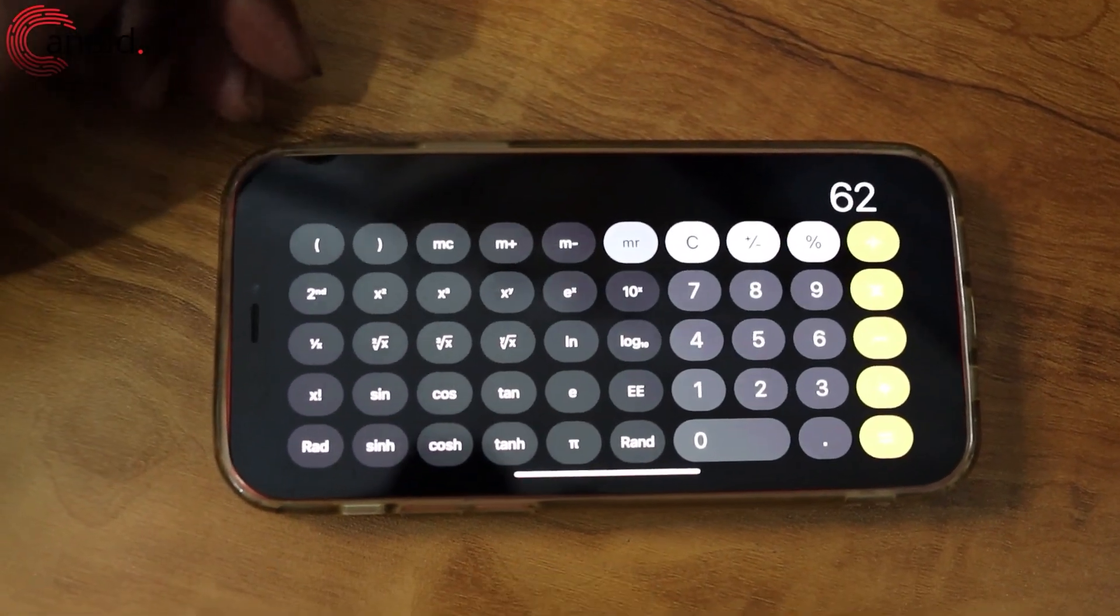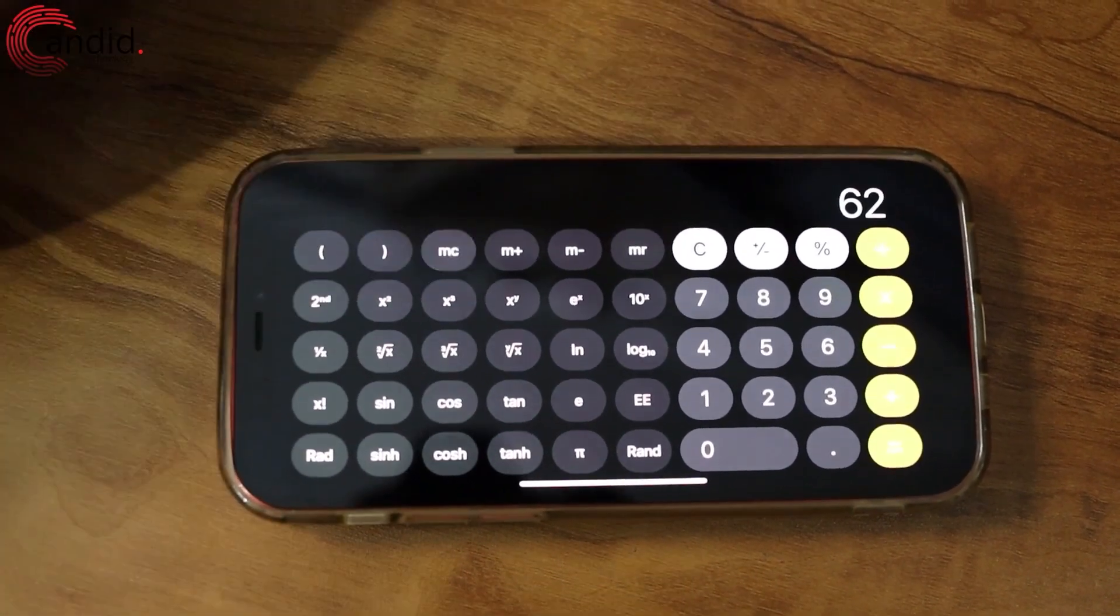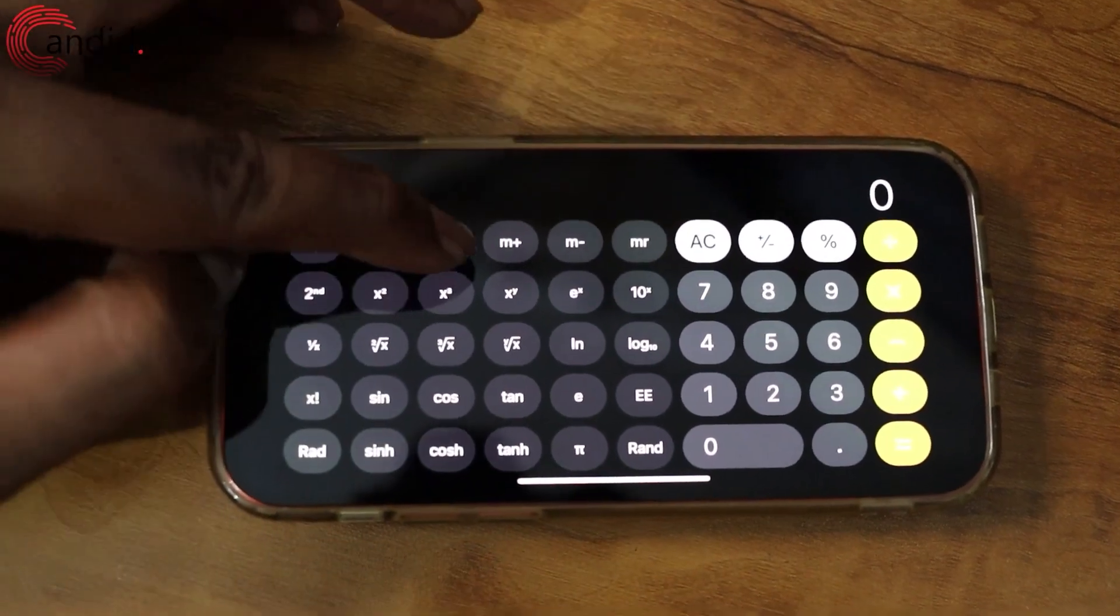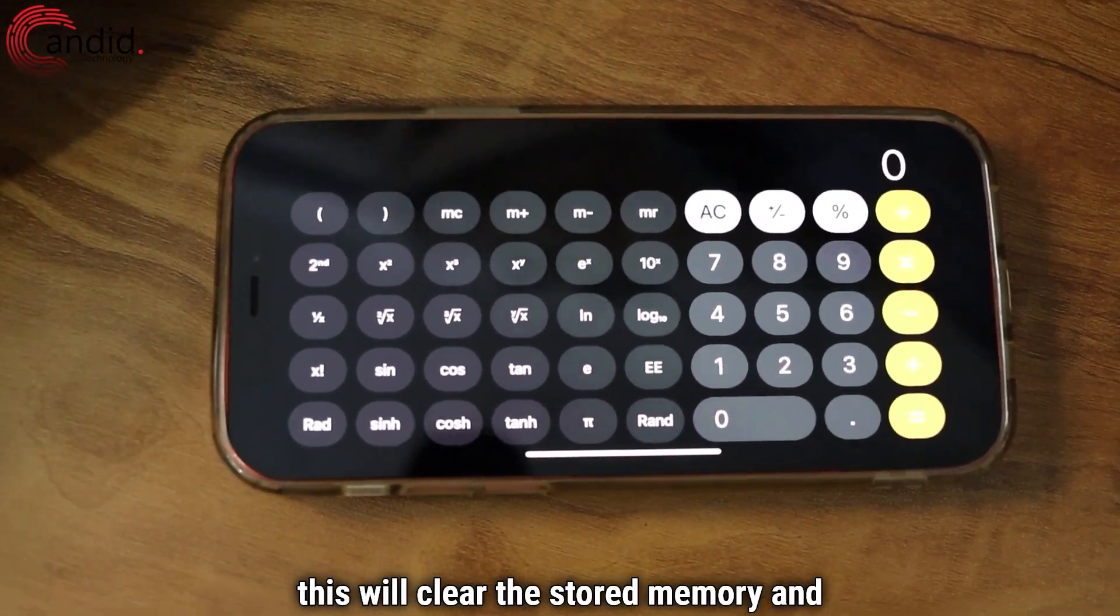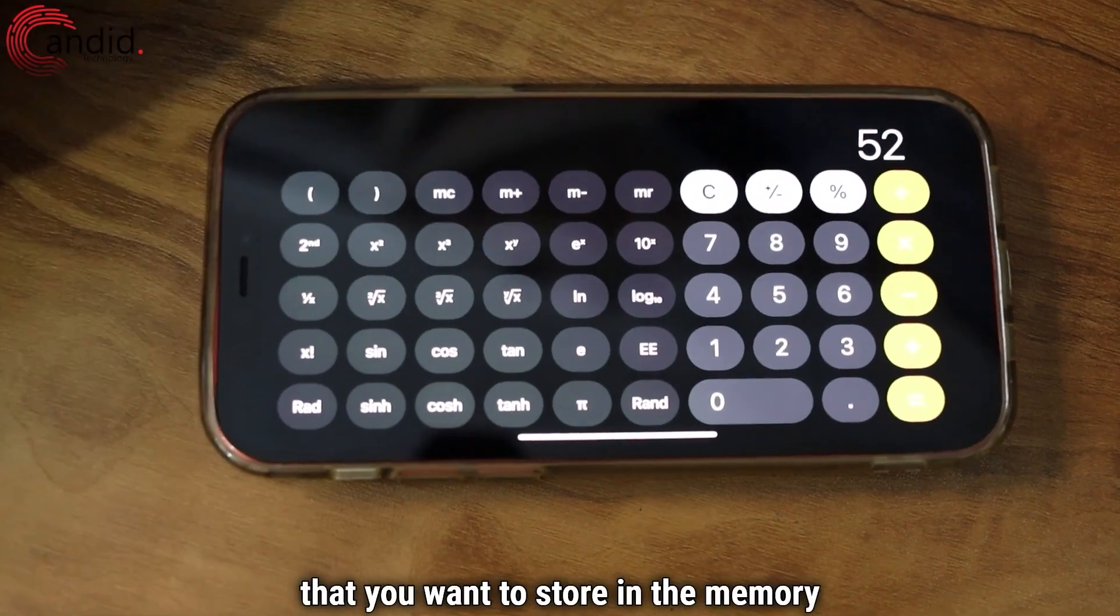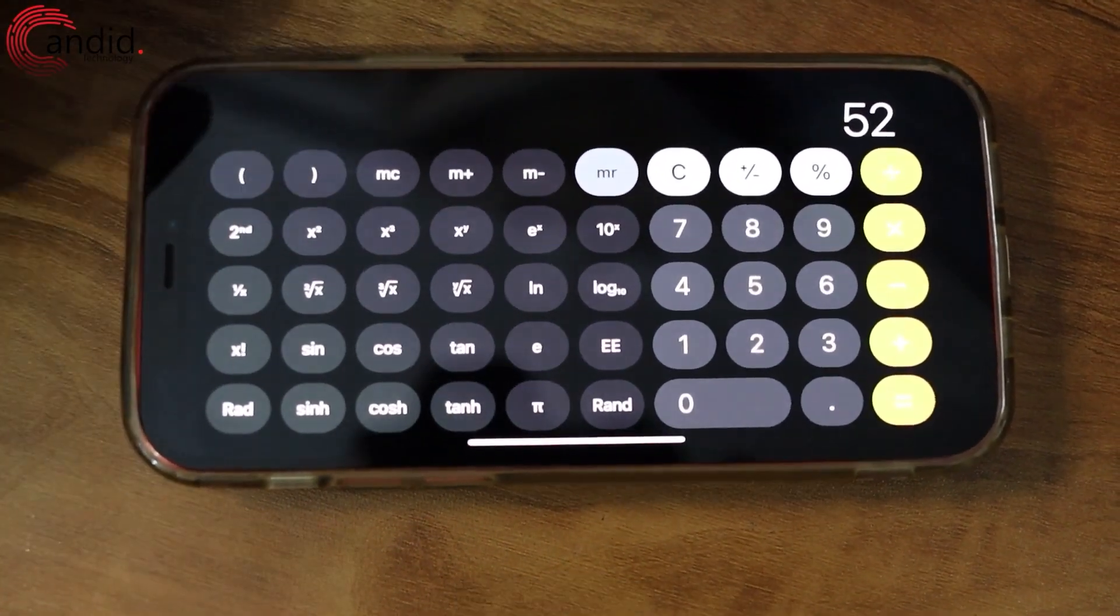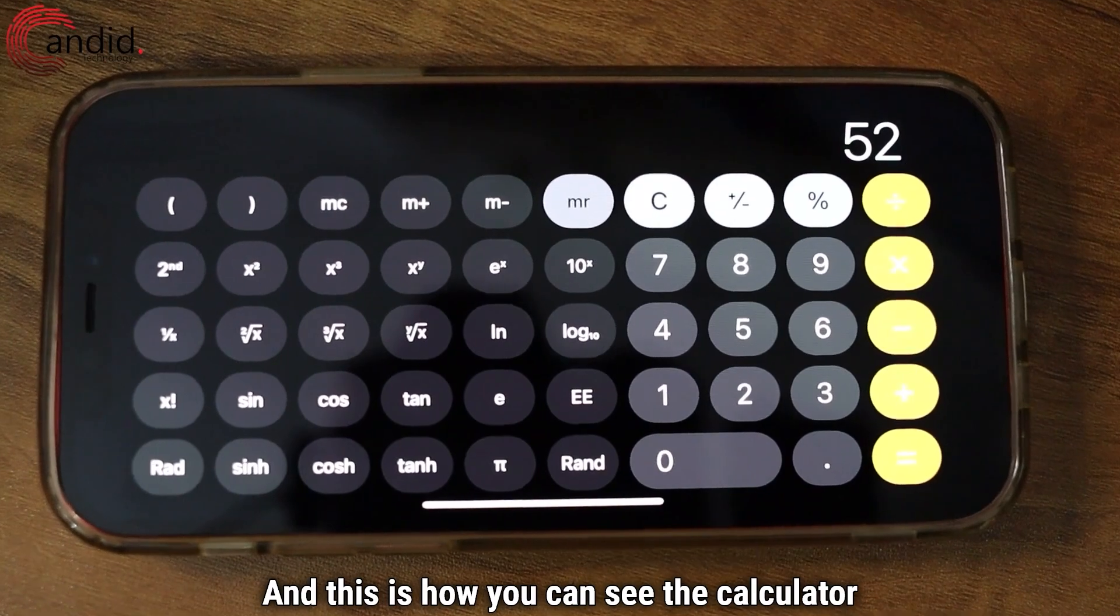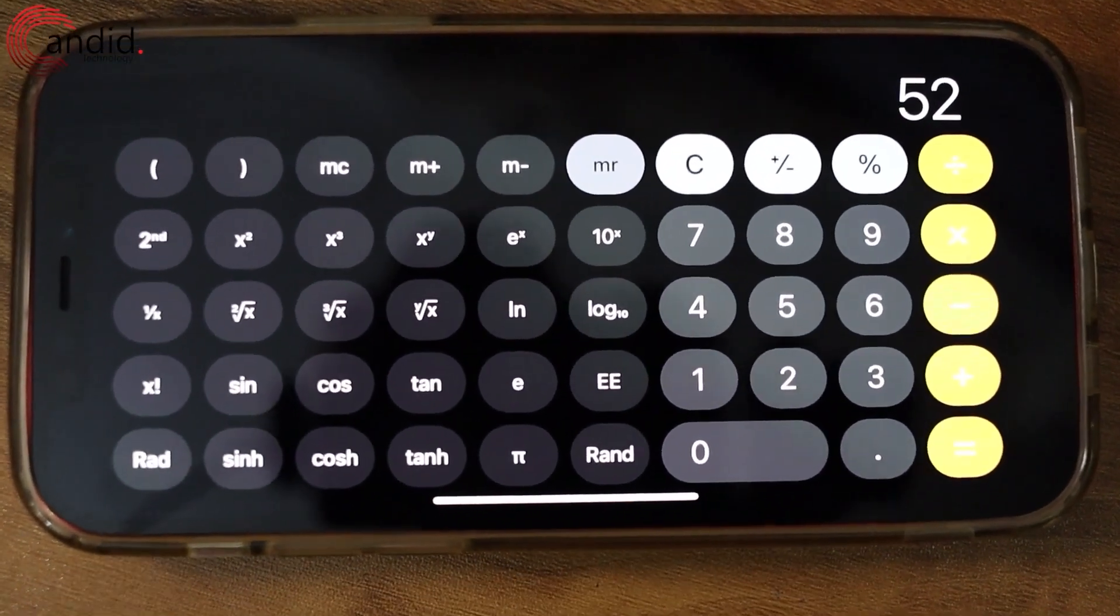To clear the stored memory, we'll press MC and this will clear the stored memory. And you can always re-enter the number that you want to store in the memory and then press M plus. And this is how you can see the calculator history on iPhone.